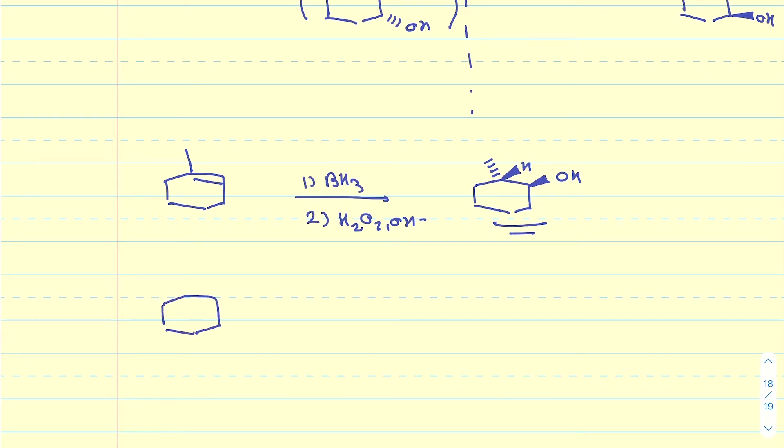On the other hand, if I add Br2 and CCl4 as the solvent, the two Brs that are going to be added are going to be added on opposite sides of one another. This is an example of anti-addition. Now, an addition reaction doesn't necessarily have to be syn or anti.